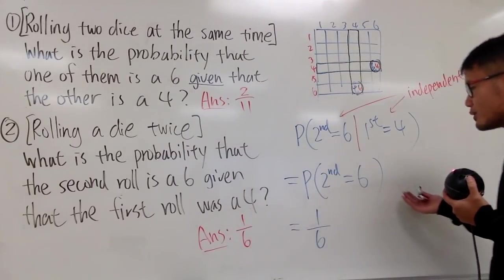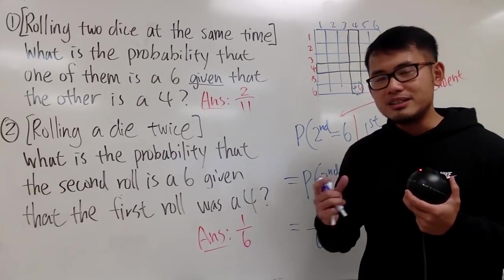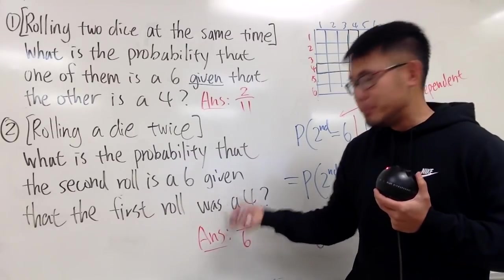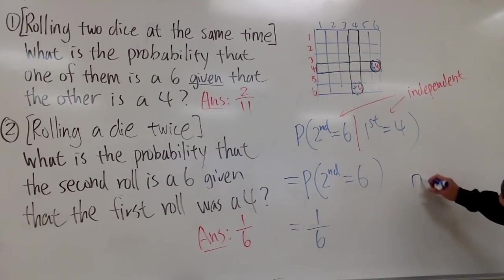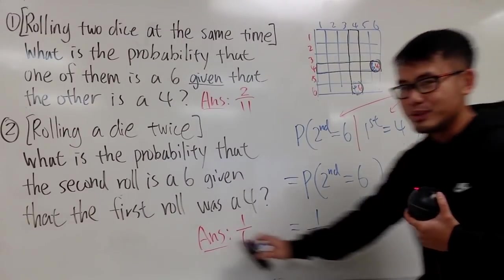And, you might also want to draw the sample space. But, you don't really have to draw any sample space for the output of the first one. Because, you know it's a 4 already. Don't quite bother. If you want, you can just draw, this is a 4. That's it. You know the first roll is a 4. So, you don't really have to do anything with it.